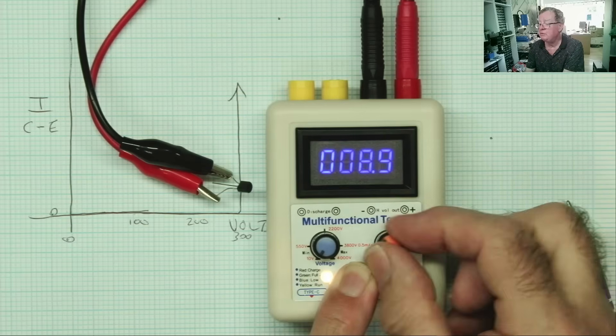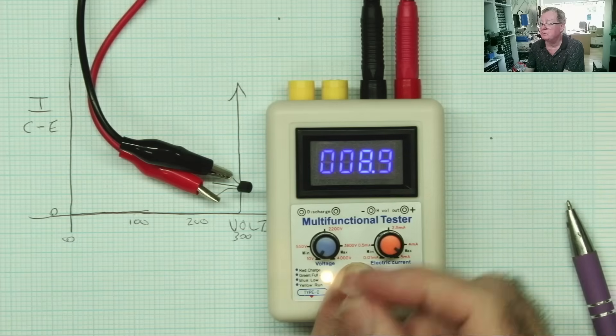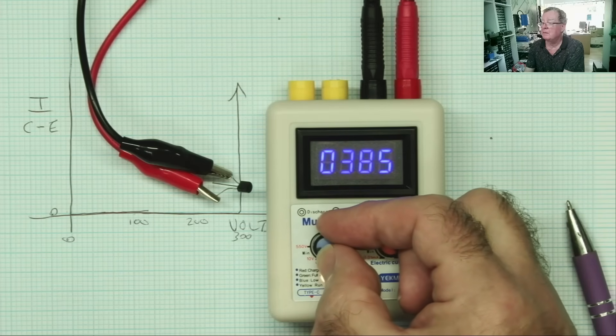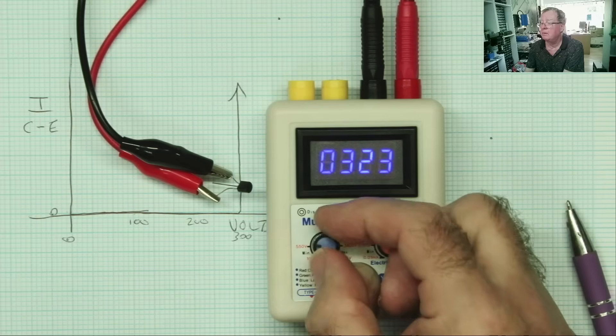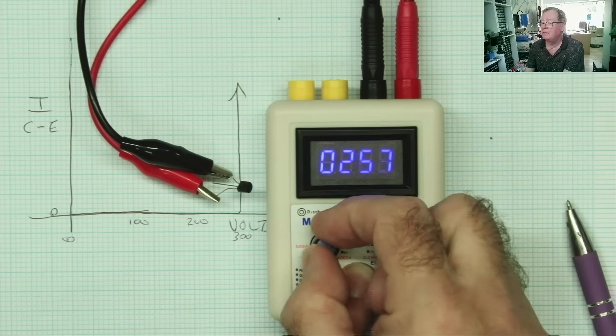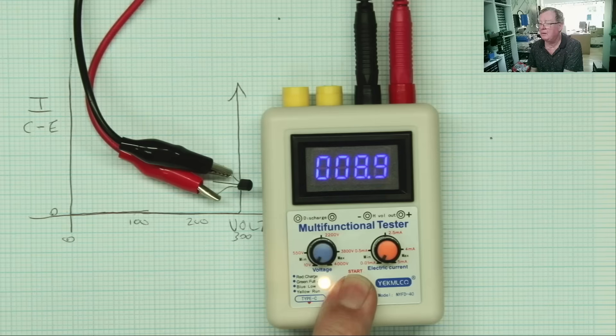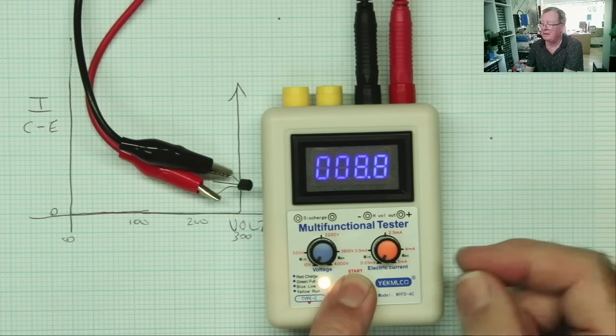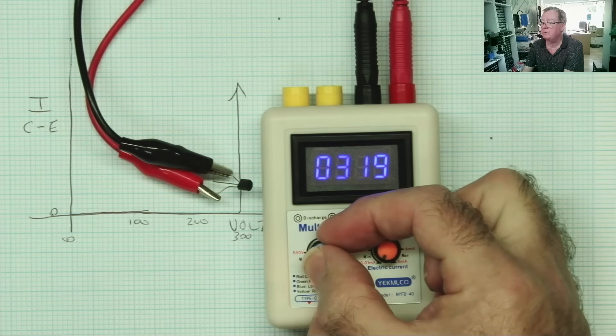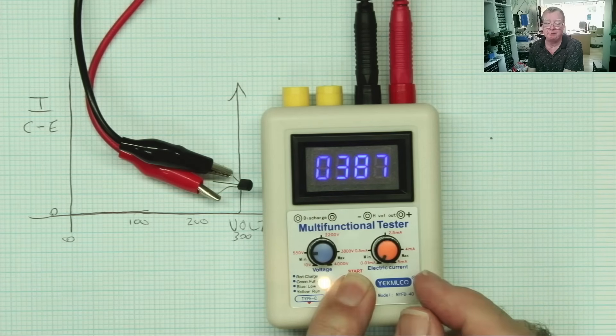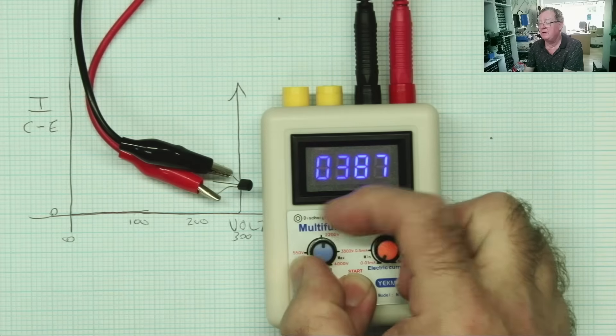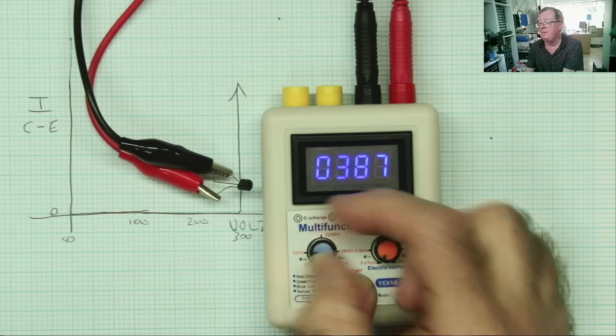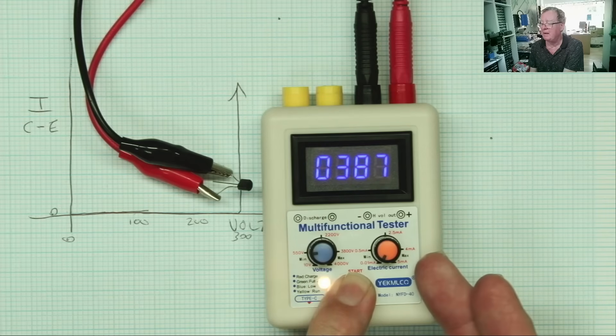Now I'm going to turn this up to 5 milliamps and just show you what happens. So it goes a little bit higher now and it's dropping. Again, low current. Turn this up, 387. It won't conduct any more. So it seemed quite capable of withstanding that 5 milliamps.